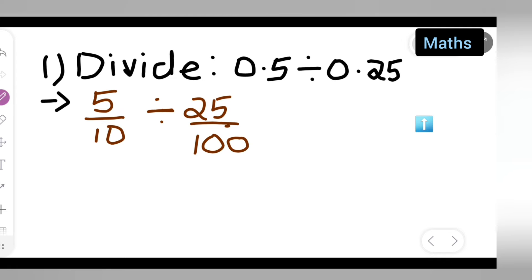Now, what I will have to do is, now this is equal to 5 upon 10. We need to divide 5 upon 10 by 25 upon 100. Now we have to take the reciprocal of this.